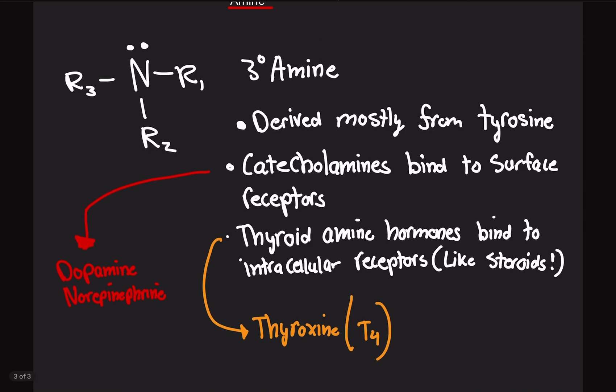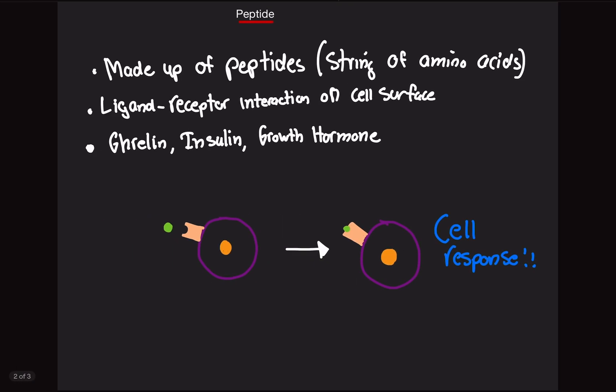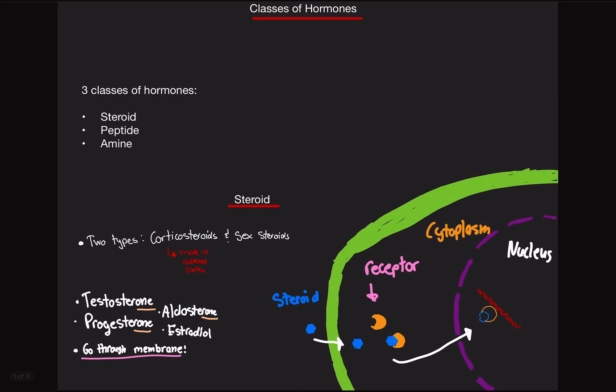For amine hormones, just know that there are two types, catecholamines and thyroid amines. And they basically are hybrids. We have one group that can bind to surface receptors, and the second one can bind to intracellular receptors. And that is basically it. All you need to know about the classes of hormones. We're going to get more into it when we talk about the actual hormone endocrine system in detail. But this is the basic overview, easy three classes of hormones. Steroid, peptide, and amine.